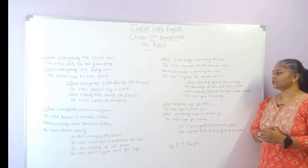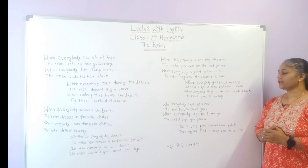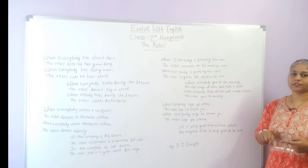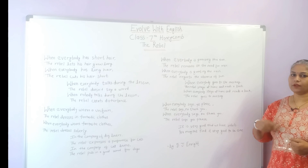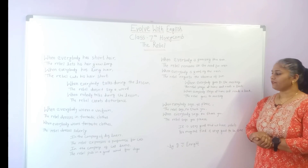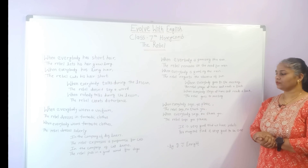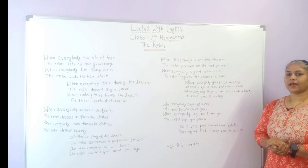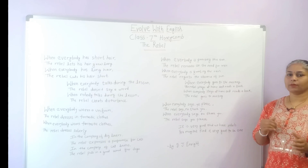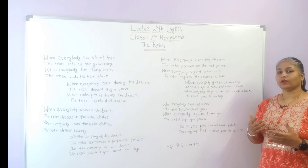In the next stanza, when everybody goes to the meeting, the rebel stays at home and reads a book. When everybody stays at home and reads a book, the rebel goes to the meeting. In the 7th stanza, when everybody says 'yes please,' the rebel says 'no thank you.' When everybody says 'no thank you,' the rebel says 'yes please.' This kind of contradictory and funny behavior is found in the rebel.